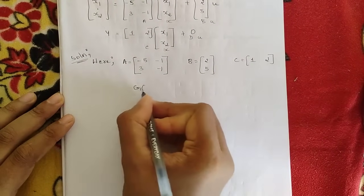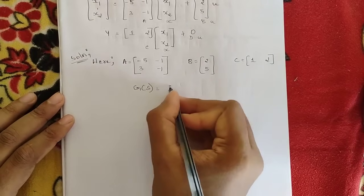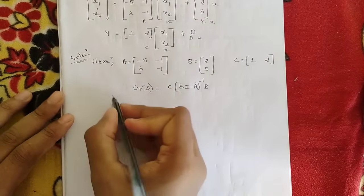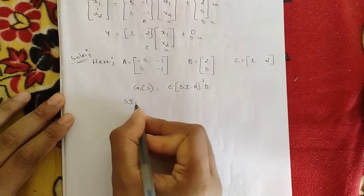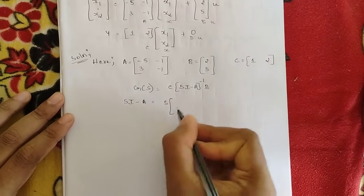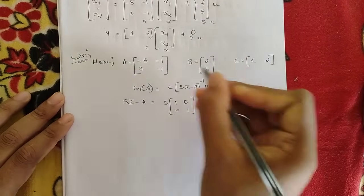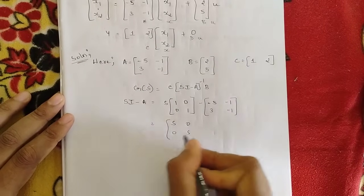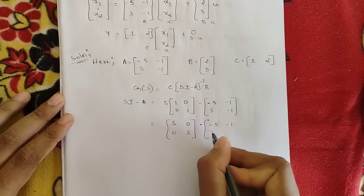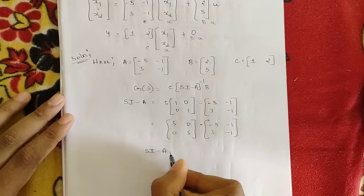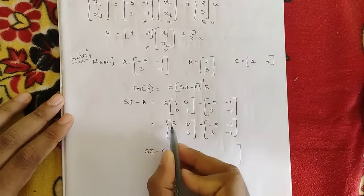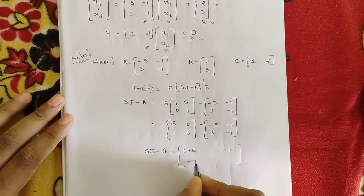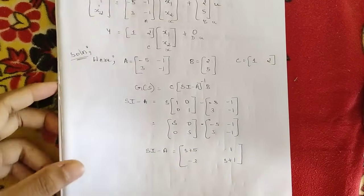Write the transfer function formula: G(s) = C · (sI - A)⁻¹ · B (D = 0 so omitted). Find sI - A: s·[1,0;0,1] - [-5,-1;3,-1] = [s+5, 1; -3, s+1]. This is the sI - A matrix for Problem 2.